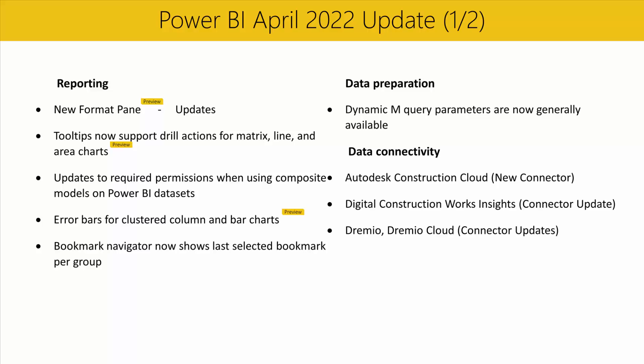In the data connectivity section, we have several new and updated connectors this month. The Autodesk Construction Cloud Connector allows customers with unified ACC accounts and BIM 360 accounts to import their data connector extractions directly into Power BI. It allows teams to quickly extract project data across their entire account, and with this certified connector, customers can streamline the data extraction process and schedule their Power BI dataset to be updated automatically with the latest data connector extract.